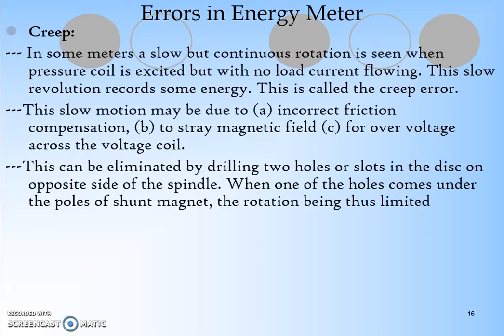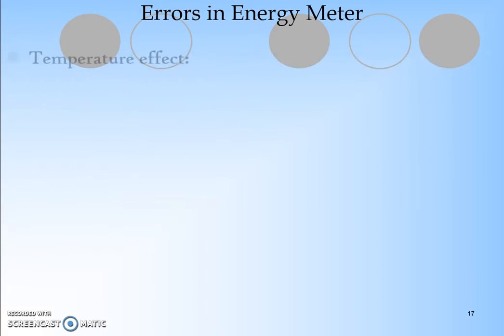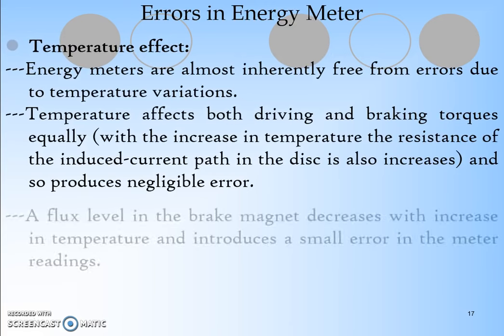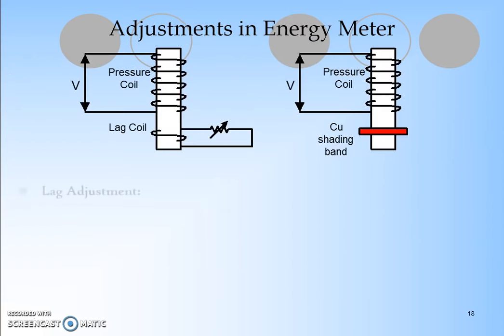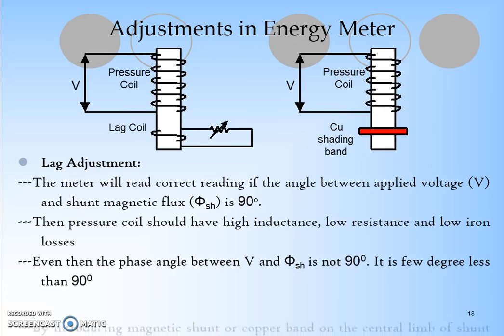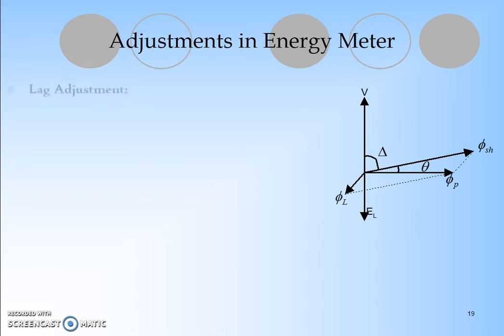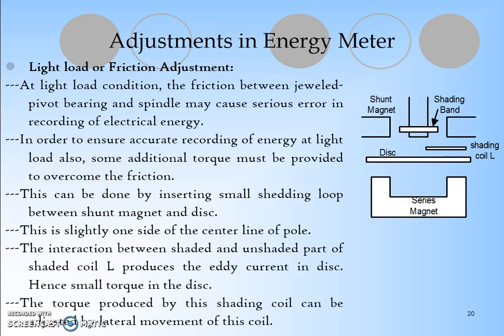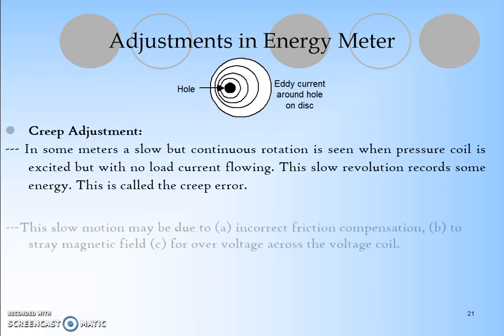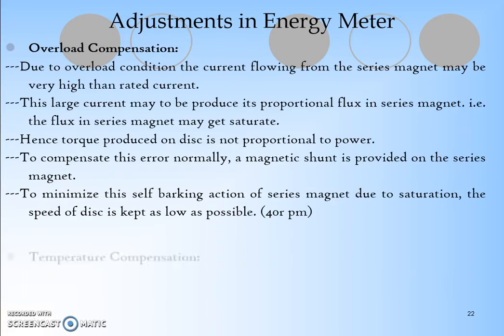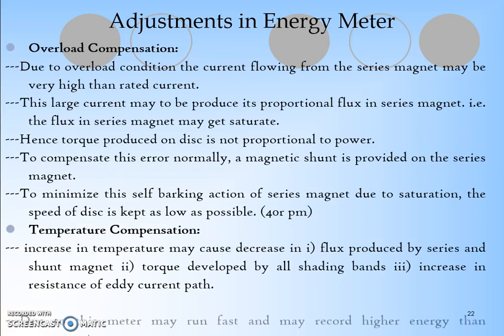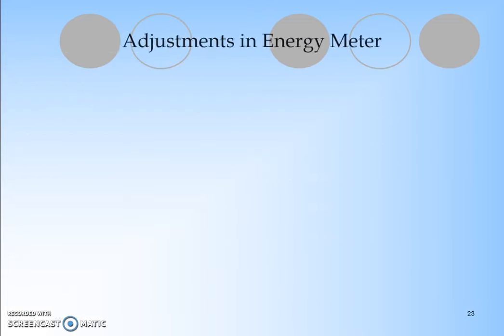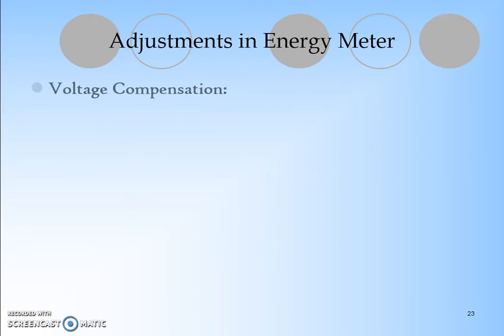Then creep is another type of error, and due to variations in temperature we also have errors. There are some more light load and friction adjustments - these are all other types of errors. Creep can be avoided by providing holes in the disc. These are all the main constructions, working, and errors in the energy meter.